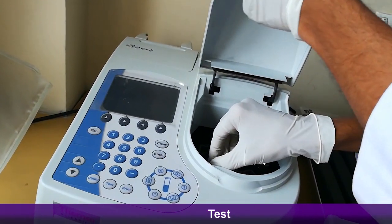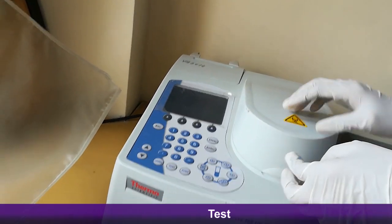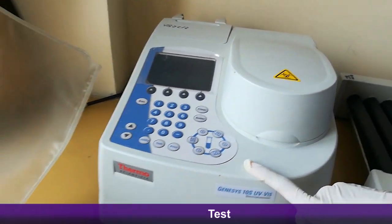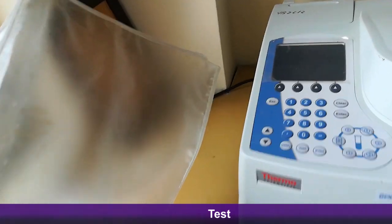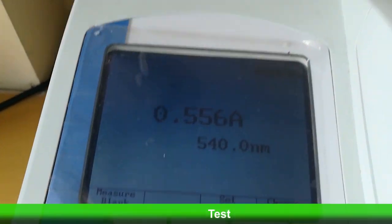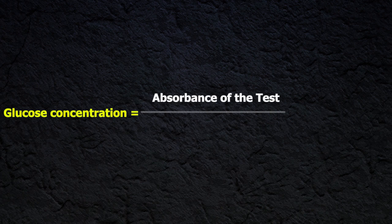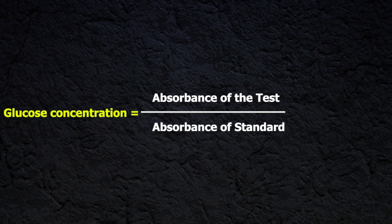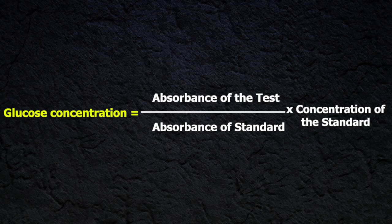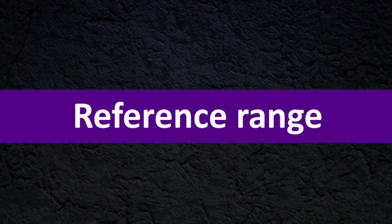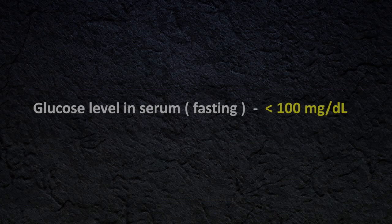The test is performed in triplicate to generate accurate results. The results are calculated using the standard. Calculation: Glucose concentration = (Absorbance of test / Absorbance of standard) × Concentration of standard. Reference range: Fasting serum glucose level should be less than 100 mg per deciliter.